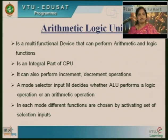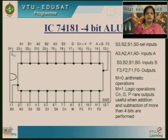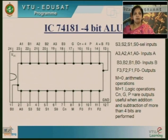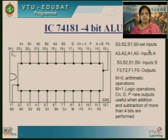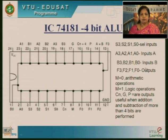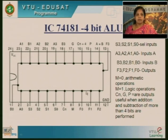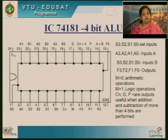Let us look at the IC 74181, which is a 4-bit ALU. This IC has 24 pins. We have 4 selection inputs S3 to S0, input sets A3 to A0 and B3 to B0, and outputs F3 to F0. We also have a mode selection input M, which can be made 0 or 1 based on what kind of operation you want to perform — arithmetic or logical.